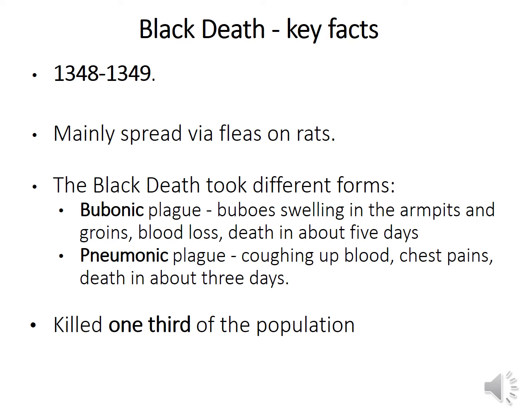The first thing we need to know are the key facts. The most important is when it happened: 1348 to 1349. It was a disease spread via fleas on rats, and it took different forms. There's the bubonic plague — if you had the bubonic plague, you had buboes, which were giant black swellings in the armpits and groin, along with blood loss. If you had the bubonic plague, you would often die in about five days.